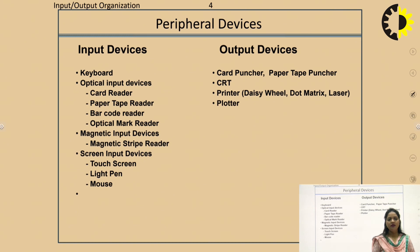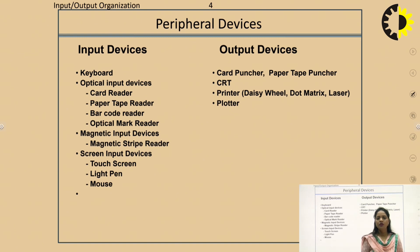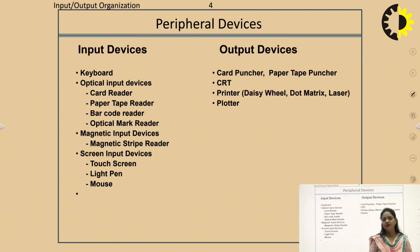Output devices include card puncher, paper tape puncher, CRT cathode ray tube monitors, printers like daisy wheel printer, dot matrix printer, laser printer, and plotter. The third type is the input-output device, which acts as both input and output simultaneously. An example is the touch screen — we insert input by touching the interface, and the output is displayed on the same screen.